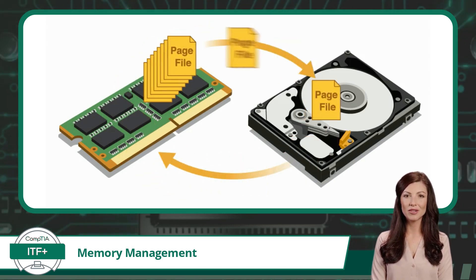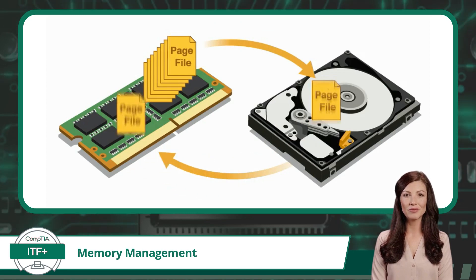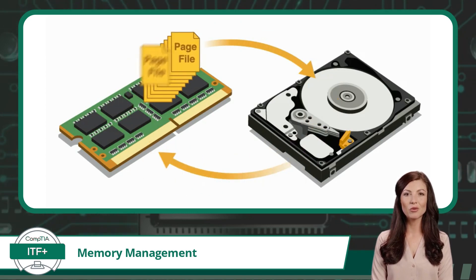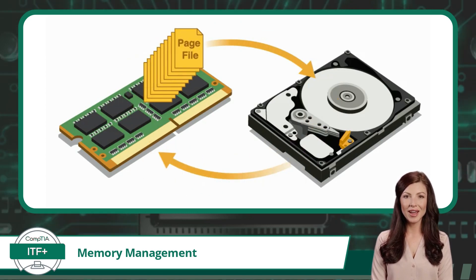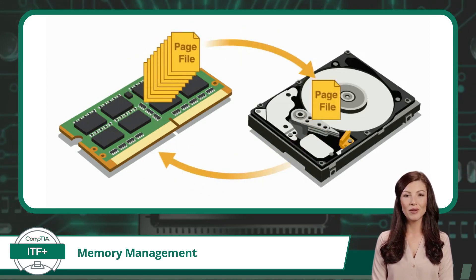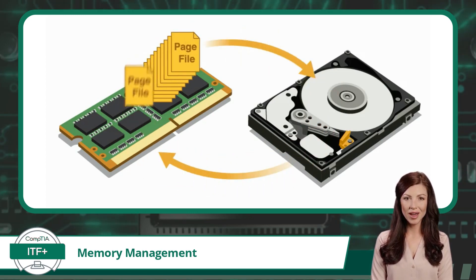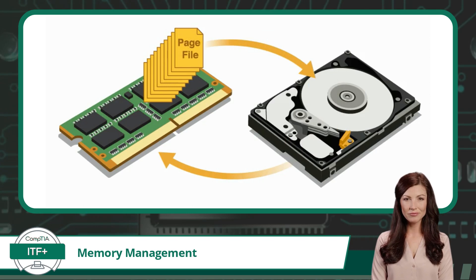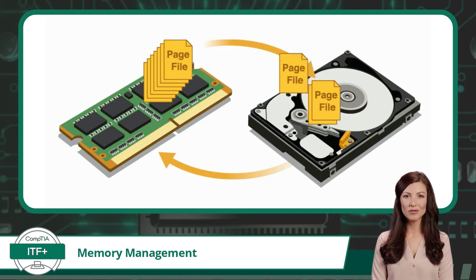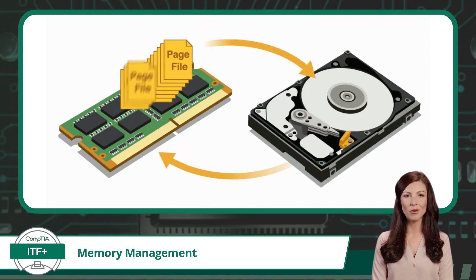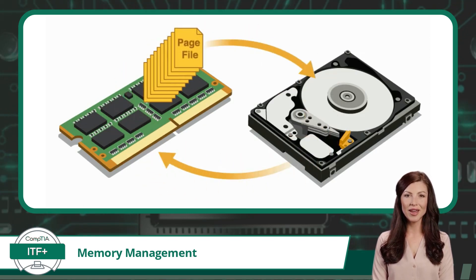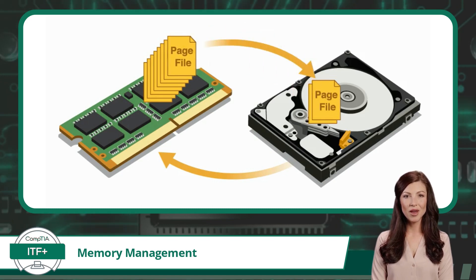Next, we have page swapping. As the user switches between different programs, the operating system uses a technique called page swapping — it moves pages in and out of the physical RAM and the page file as needed. When a program that has pages stored in the page file becomes active again, its pages are moved back to the RAM for faster access.